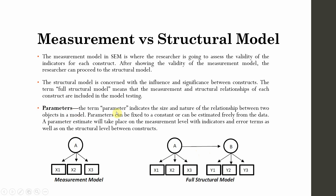What are parameters? The term parameter indicates the size and nature of the relationship between two objects in the model. Parameters can be fixed to a constant or estimated freely from the data. Parameter estimation takes place on the measurement model — with indicators and error terms — as well as at the structural level between the constructs.